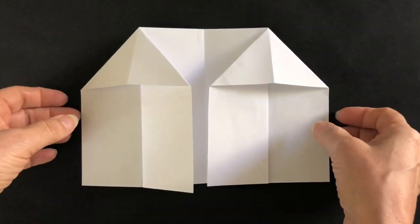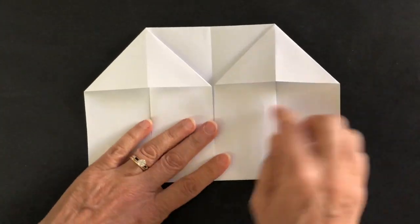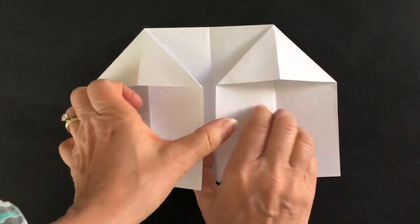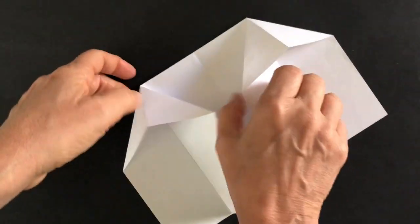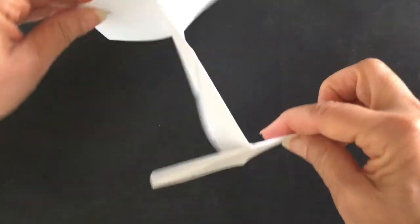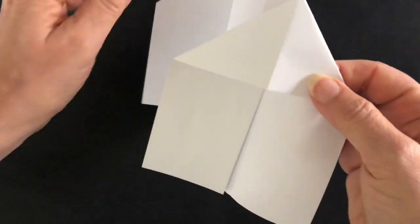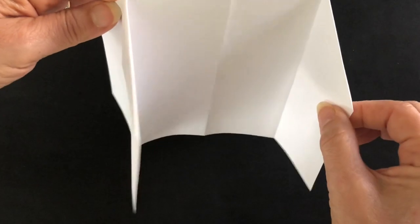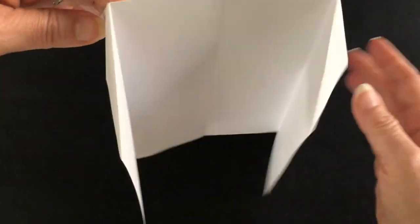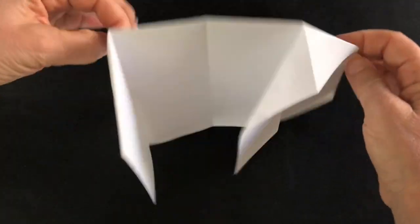From here there's a million possibilities. This could be drawn on and each of these could be a little room. This can stand up and be made dimensional in this way. This could be the front, this could be a side of the house, this could be a back of the house. There's several ways you can do this.